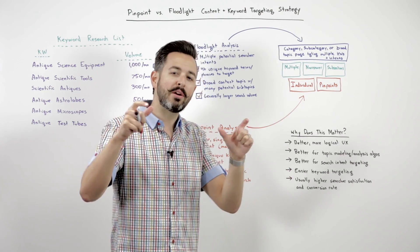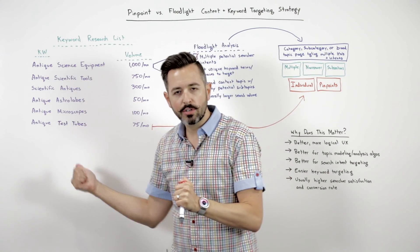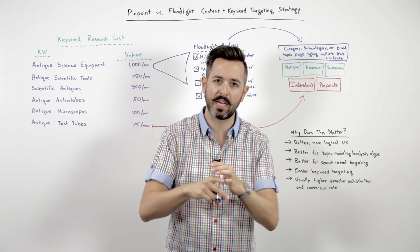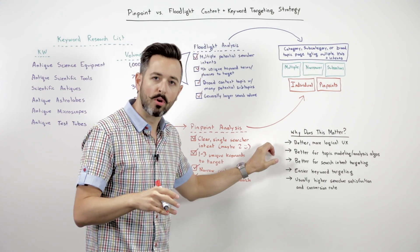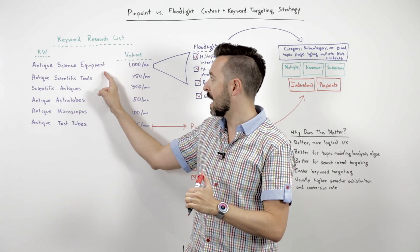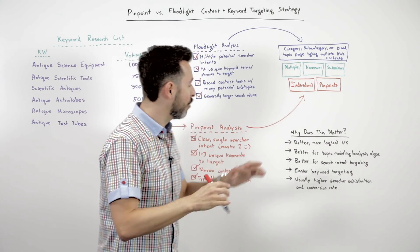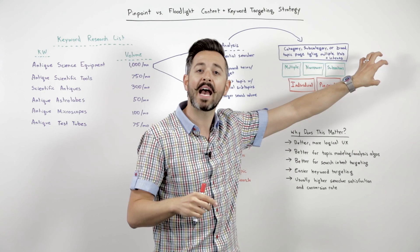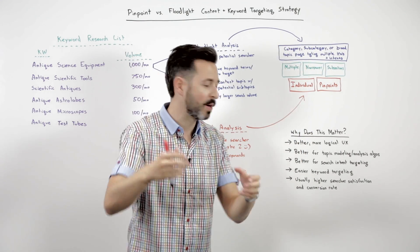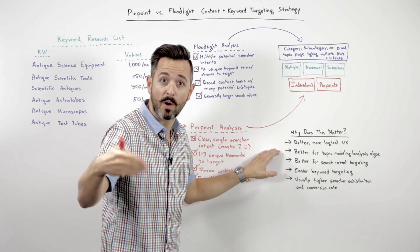Why are we doing this? Generally speaking, if you can take your terms and phrases and categorize them like this and then target them differently, you're going to provide a better, more logical user experience. Someone who searches for antique scientific equipment is going to really expect to see that category and then be able to drill down into things. So you're providing them the experience they predict, the one that they want, the one that they expect.